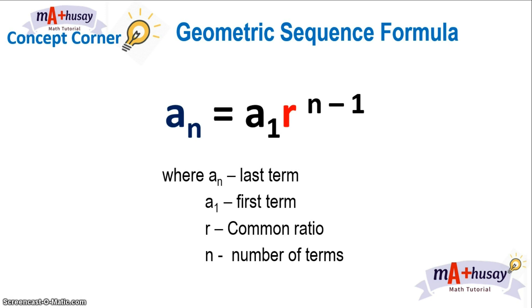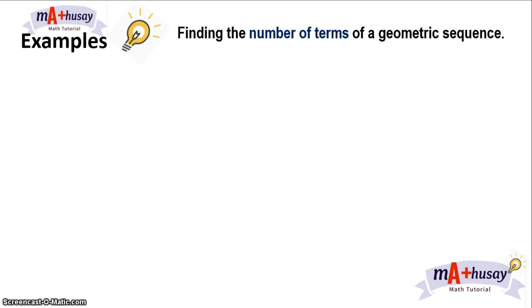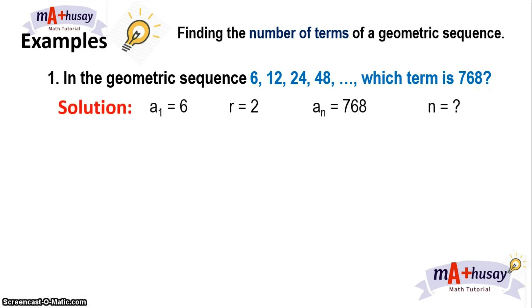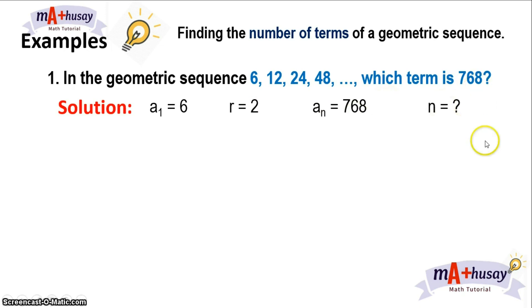Example number 1. In the geometric sequence 6, 12, 24, 48, which term is 768? We know that the first term is 6. The common ratio is 2 because 6 times 2 will give you 12. 12 times 2 will give you 24 and so on. So, a sub n is 768 and we don't know which term it is.